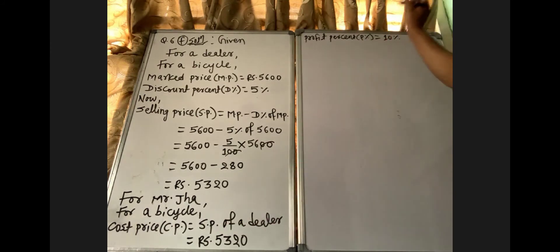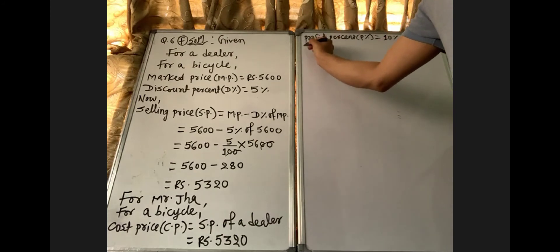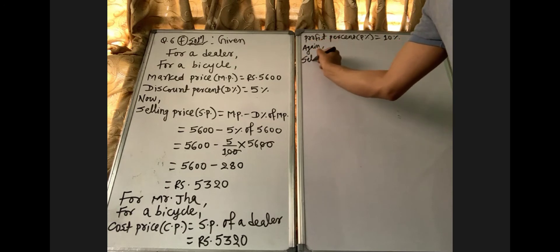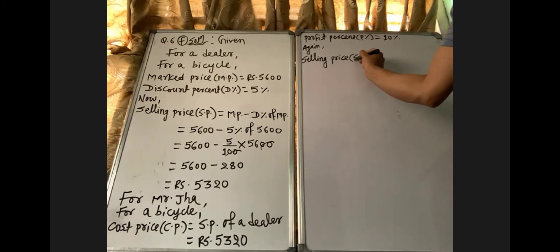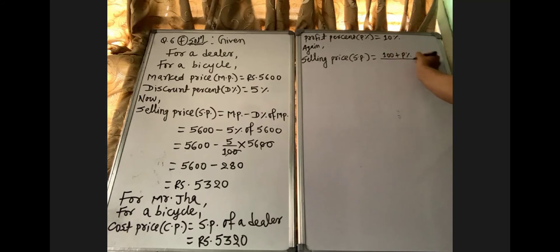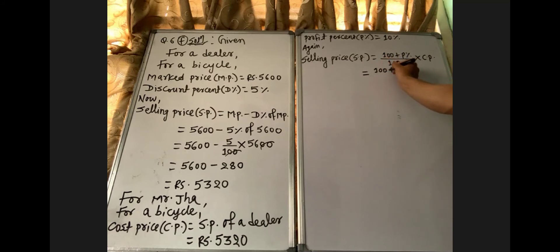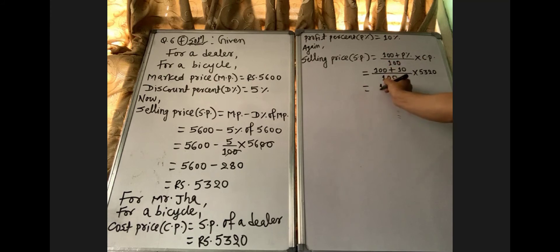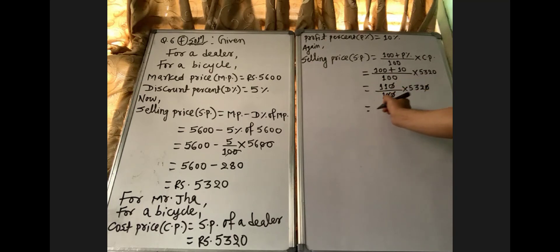Knowing CP and profit percent, we can find the selling price of Mr. Zha. Using the direct formula: SP = ((100 + P%) / 100) × CP = (110 / 100) × 5320. We cancel zeros and calculate.